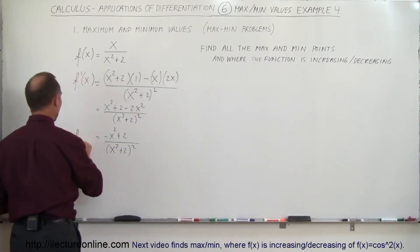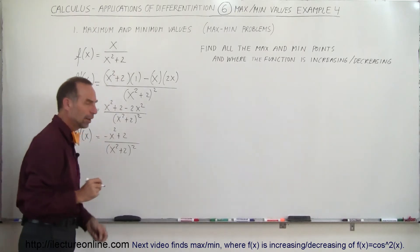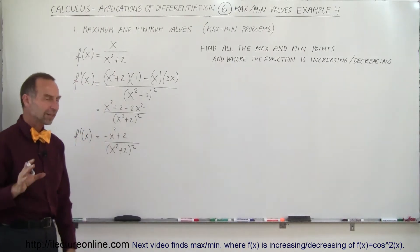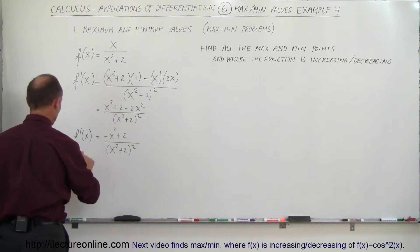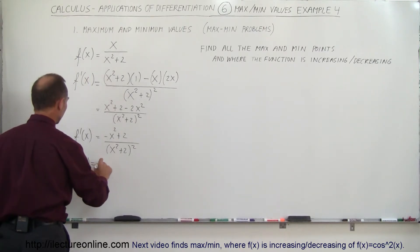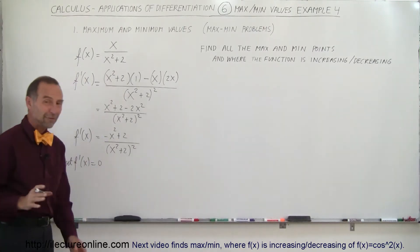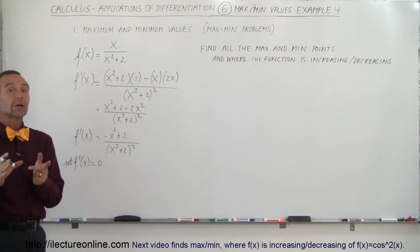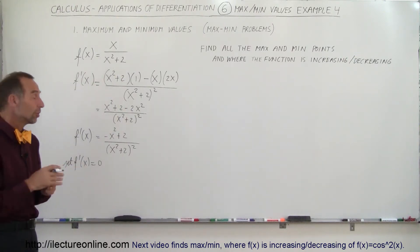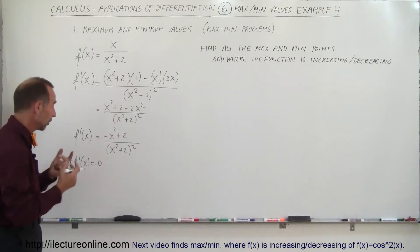So that's our derivative, f prime of x. Now we're going to set the derivative equal to 0. Remember, if we have a fraction set equal to 0, that means the numerator should equal 0 — if the whole fraction equals 0, the numerator equals 0.